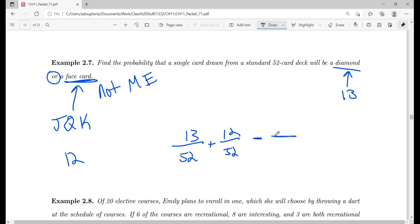But I have to subtract the probability of getting a diamond face card. And there are three of those. There's the jack of diamonds, the queen of diamonds, and the king of diamonds. That's going to give me a total probability of 22 out of 52, which simplifies to 11 out of 26.